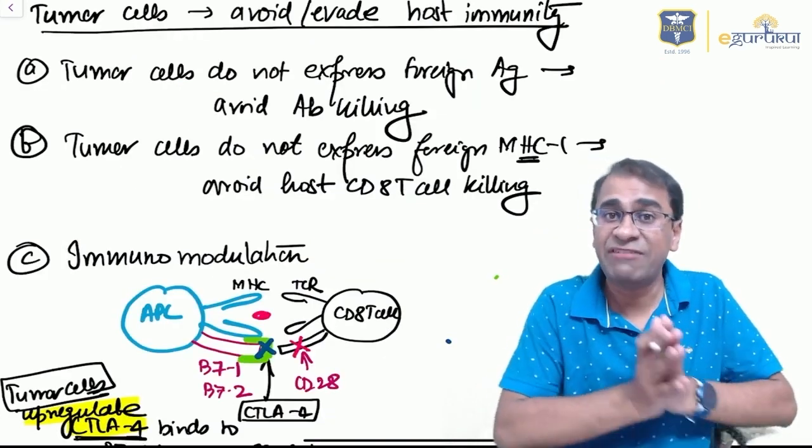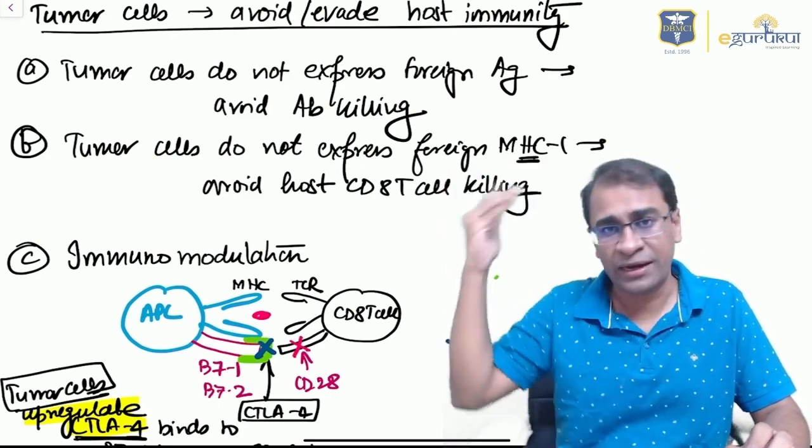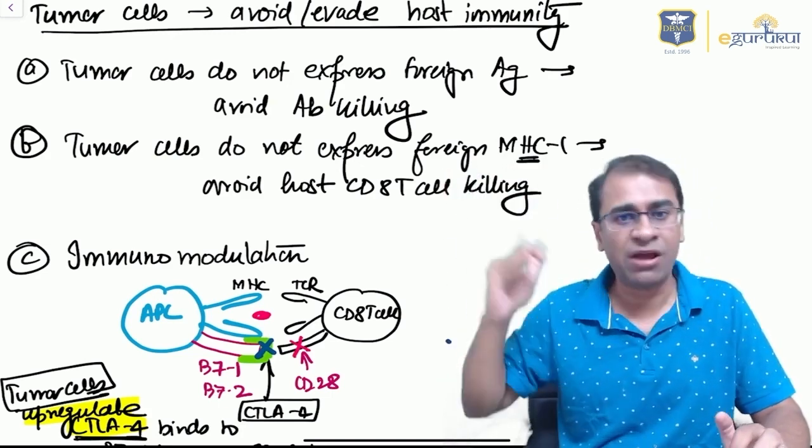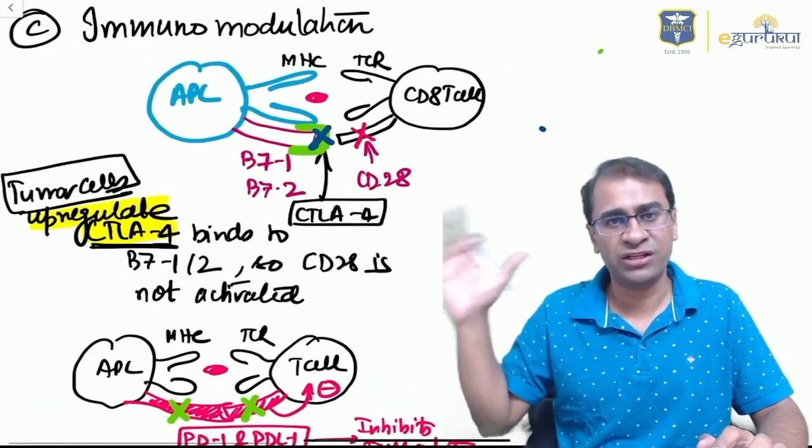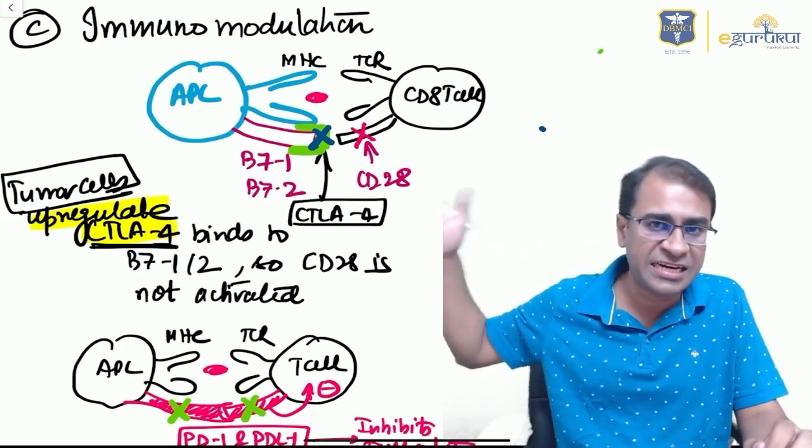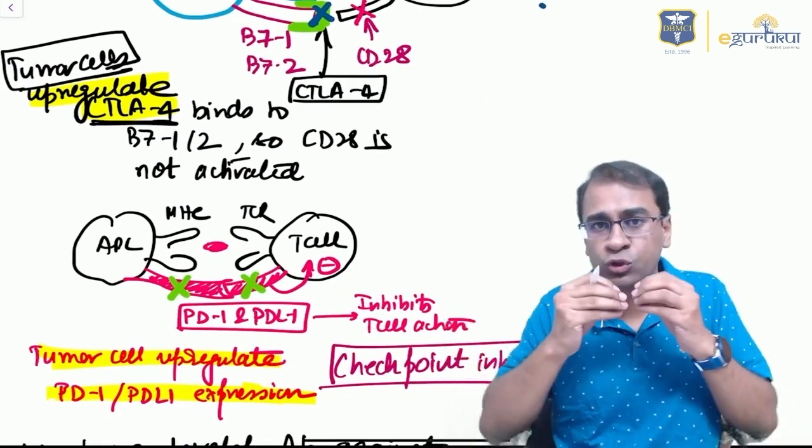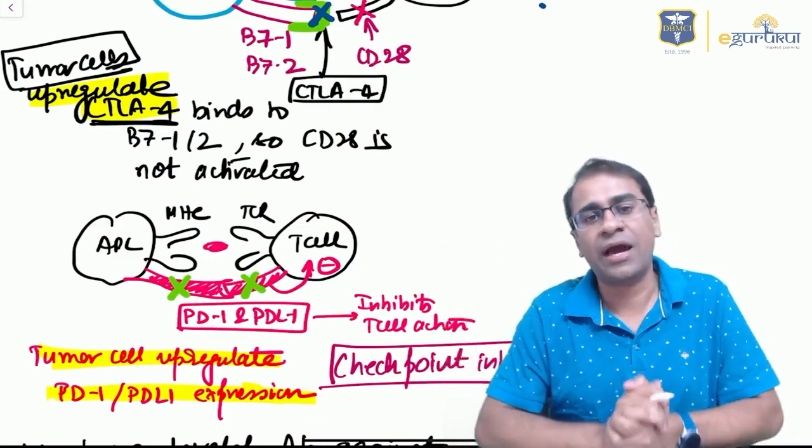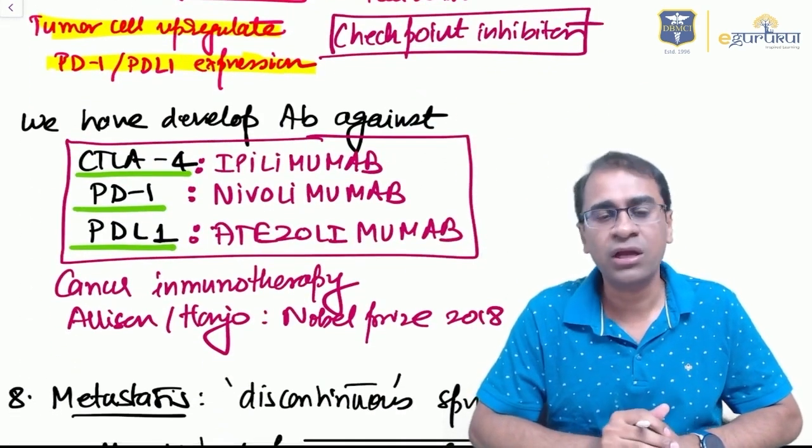How does the tumor cell evade the immune system? It does so by having negative MHC class I antigens, which is very important. One more thing is immunomodulation. I've made a different video about this. Please watch it. It talks about CTLA-4 inhibitor, PD-1, and PD-L1, which inhibit T-cell action against the APC. These are the drugs active against CTLA-4, PD-1, and PD-L1. This same question was asked recently in NEET.